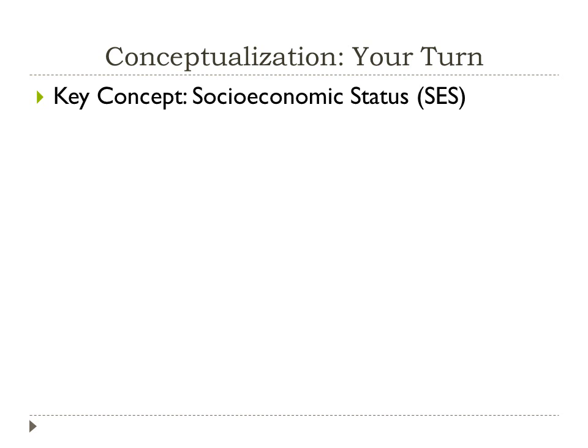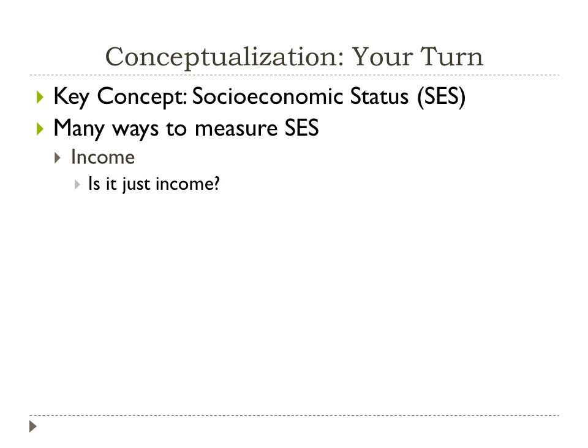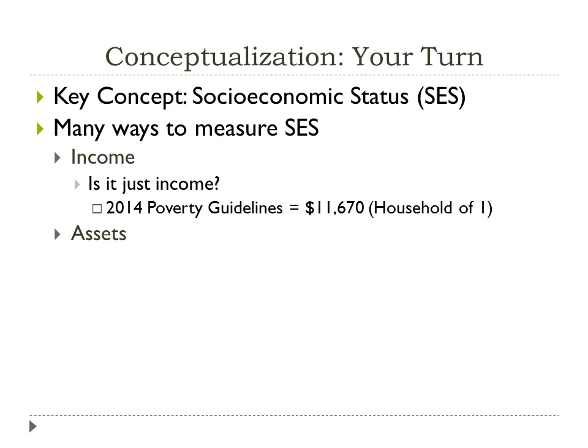A key concept we might use in social theories is socio-economic status. There are many ways to measure it, so it's important to tell someone exactly what you mean. We have obvious measures like income, but is socio-economic status really just about income? For example, in 2014 the poverty guidelines said a household of one person was below the poverty line if they made less than $11,670. Many college students were below that line last year but wouldn't classify themselves as low socio-economic status.